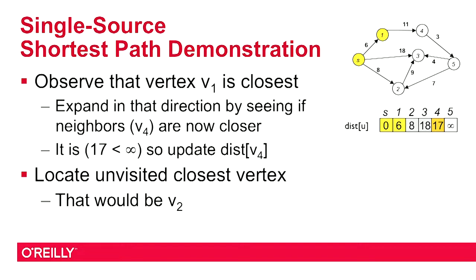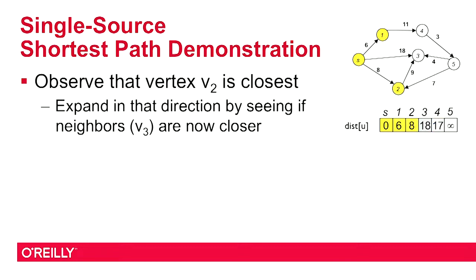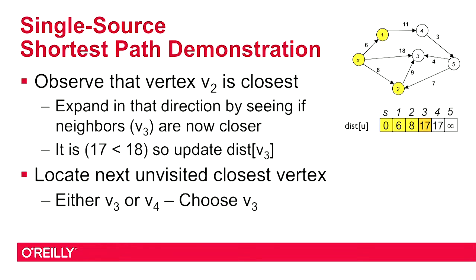When I expand to vertex v2, has this introduced another opportunity to shorten the distance to another vertex? Vertex v2 has a neighbor, v3, whose current distance is 18. But now, with this new path, I can go cost of 8 from vertex S to vertex 2, and then with the cost of 9 back up — this suggests that the shortest distance between S and that vertex is 17. Once again, we see an example of an algorithm that is able to uncover a better cost than what was originally available in the direct edge of the problem.